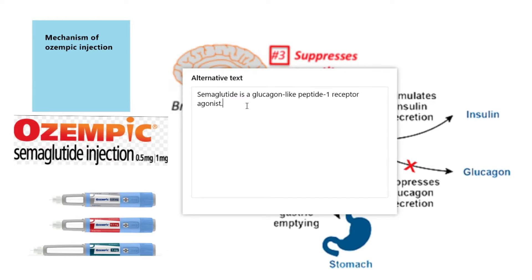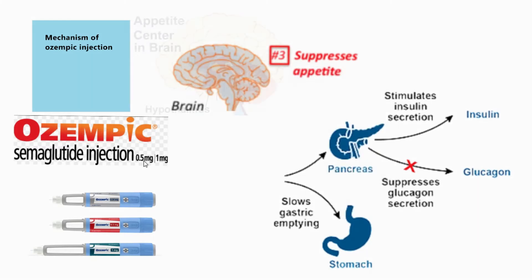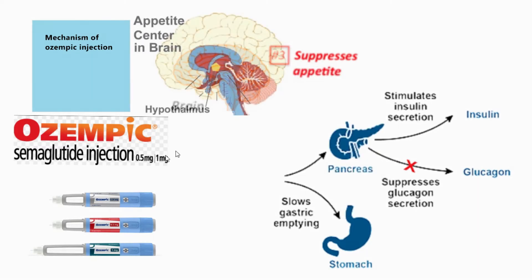Semaglutide is a glucagon-like peptide-1 (GLP-1) receptor agonist. Semaglutide suppresses the appetite center in the brain, which reduces food intake.